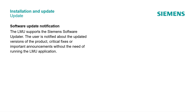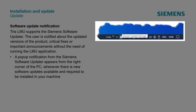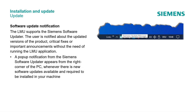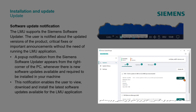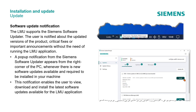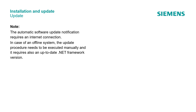In the help documentation under the section Introduction, information is available about the general system requirements. The LMU supports the Siemens Software Updater. The user is notified about updated versions of the product, critical fixes, or important announcements without needing to run the LMU application. A pop-up notification from the Siemens Software Updater appears in the right corner of the PC whenever new software updates are available and required to be installed. This notification enables the user to view, download, and install the latest software updates for the LMU application. Please note: the software update notification requires an internet connection. For offline systems, the update procedure must be executed manually and also requires an up-to-date .NET Framework version.